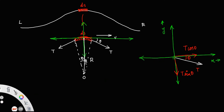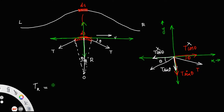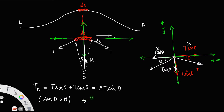Similarly, resolving the tension on the left side, it can also be resolved into T cos θ along the horizontal and T sin θ vertically. Clearly, the two T cos θ components are equal and opposite and will cancel. So the resultant tension Tr is equal to T sin θ + T sin θ, which is 2T sin θ. For small angles, sin θ ≈ θ, so Tr = 2Tθ. Let us call this equation 1.